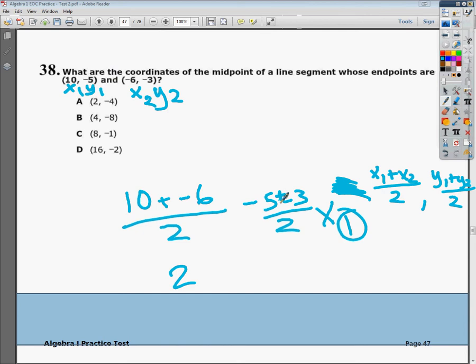So -5 and I add -3 to it, so I'm going even more negative than ever before. I get -8 over 2. Negative 8 divided by 2 is, of course, -4. So my answer for my midpoint is (2, -4).